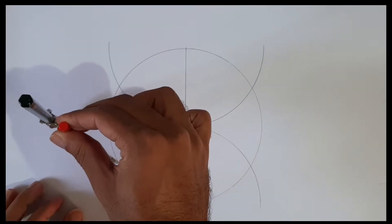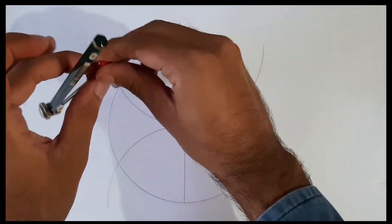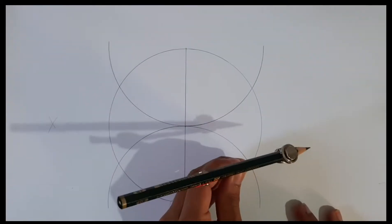Now place the compass needle on points where the semicircles coincide with our main circle. This will make two cuts.